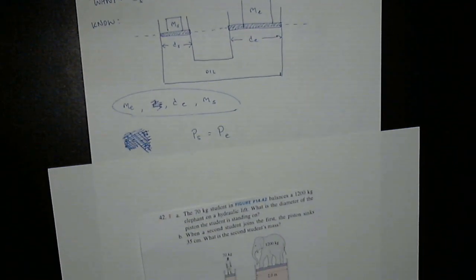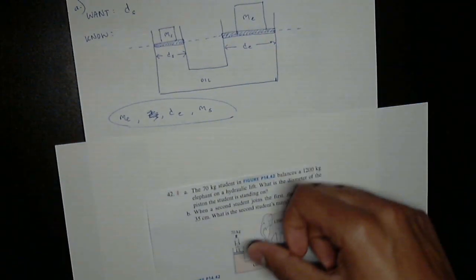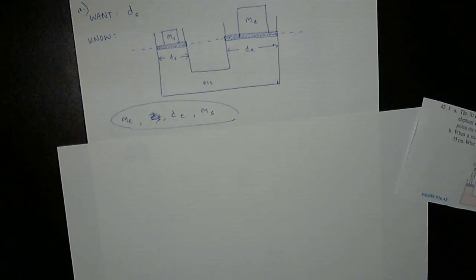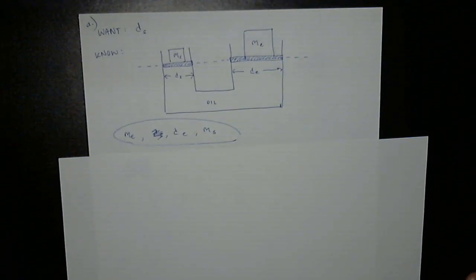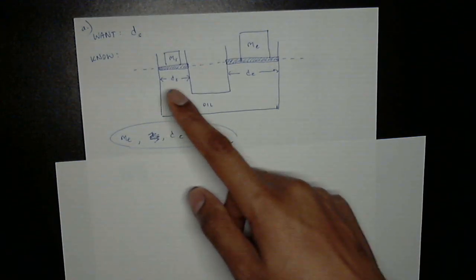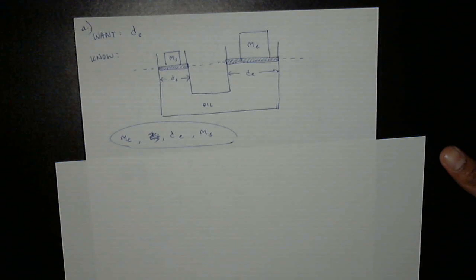So to start off, one big pitfall that I think maybe not a lot of people, but I certainly have had that you should be careful not to make. Whenever I have problems like this on past engineering tests, I always assume that the problem is a lot more complicated than it actually is. Specifically, I assume that because this diameter is less than this, there's going to be some complicated change in pressure.